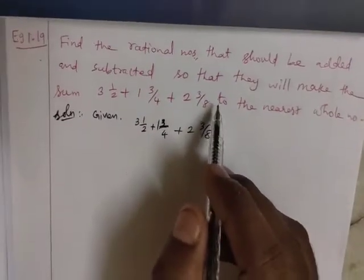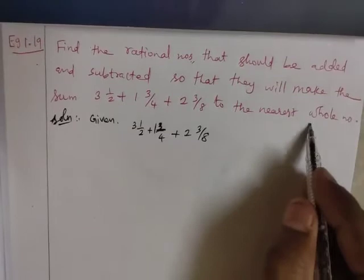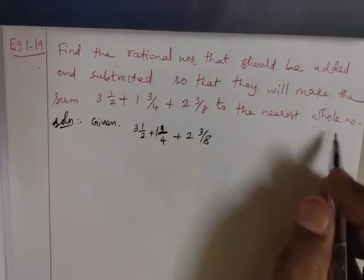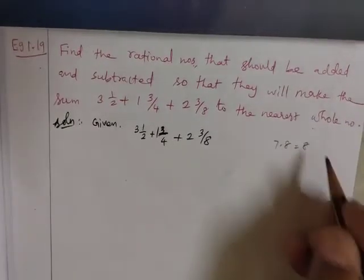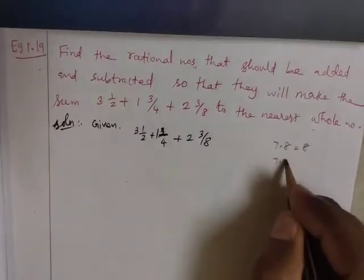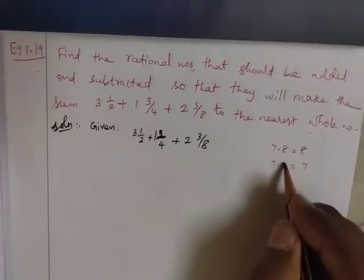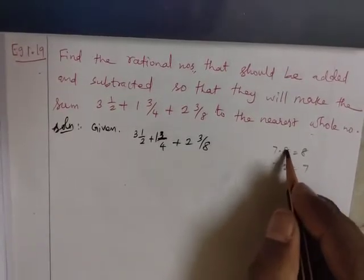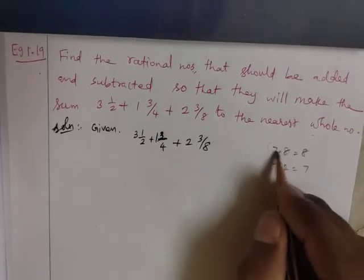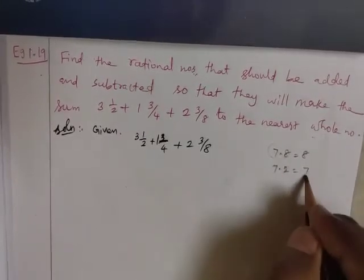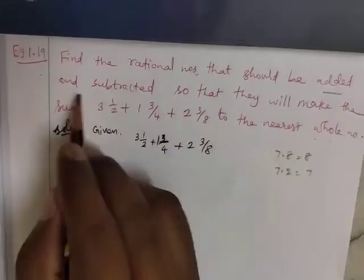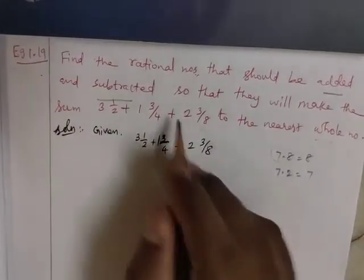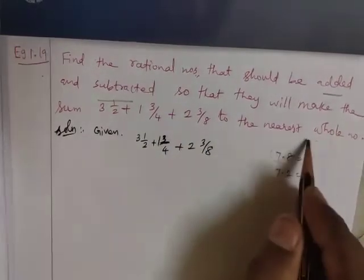The sum will be in one row. If you add the answer, the answer should be nearest to the whole number. For example, if you have 7.8, it will round to 8. If you have 7, it stays 7. So you add or subtract the appropriate value to get the nearest whole number.